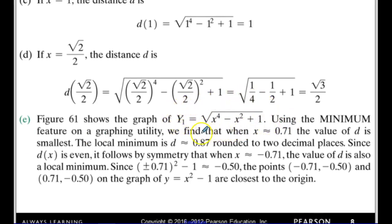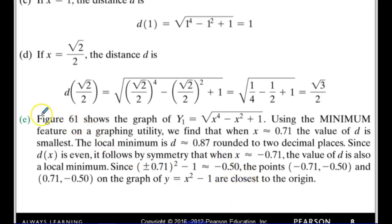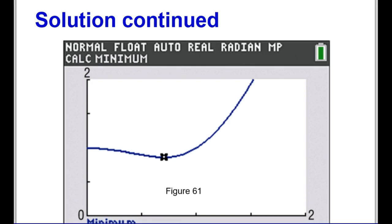I graph the distance function and then use the minimum feature on my calculator, or in Desmos I click on the part closest to the minimum and it tells me the x and y values. I find that x is approximately 0.71 — that's where the distance is smallest. So we can see on the graph where the distance is shortest and where it's longest. You can use a graphing calculator or Desmos to do the same thing.